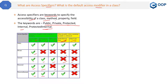The last one is protected internal. Protected internal is accessible within all the classes of the same assembly. It will also be accessible in the derived classes of another assembly. So these are all the access specifiers. Public, private, and protected are very important and frequently used. Internal and protected internal are related to assemblies, so they are not as frequently used, but it's good to know them.